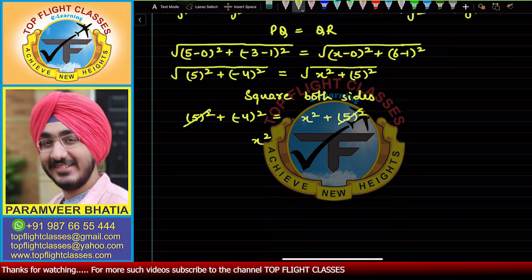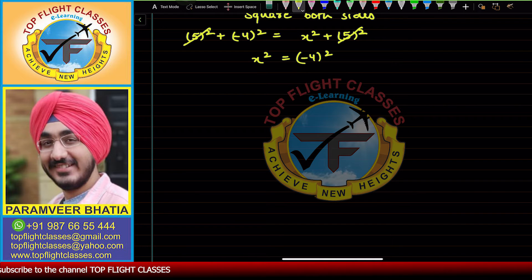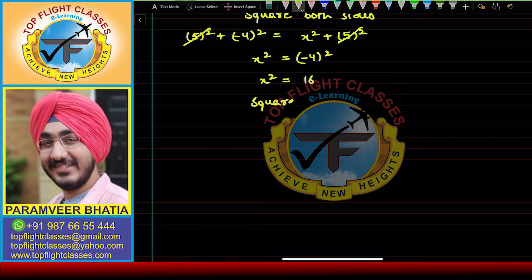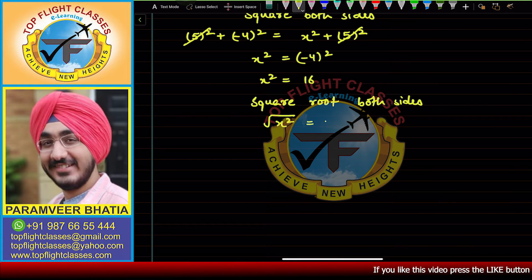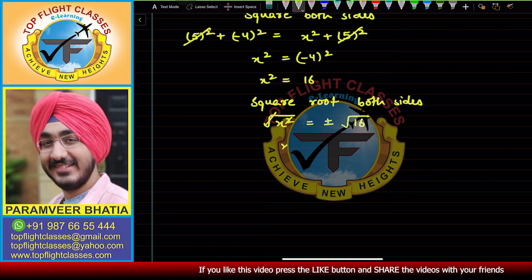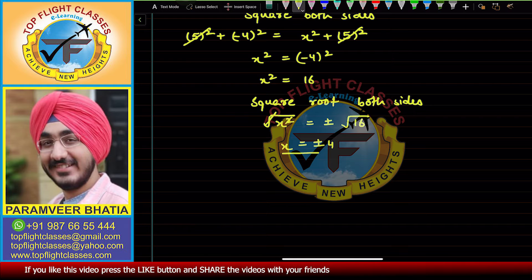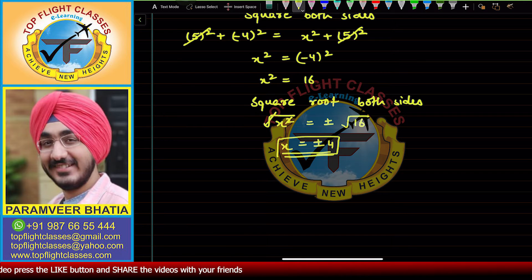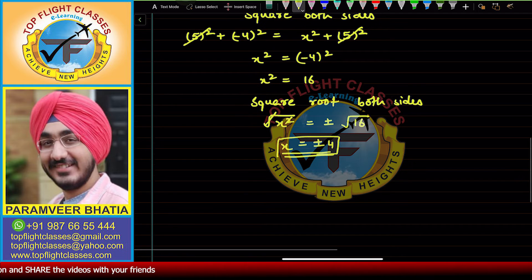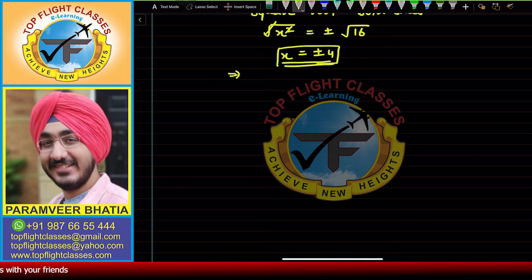From squaring both sides, the 5² terms cancel, giving x² = (−4)² = 16. Taking the square root: x = ±4. So we have two values: x = 4 and x = −4.